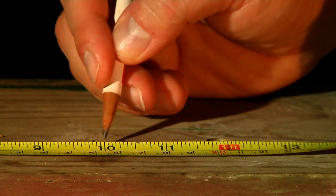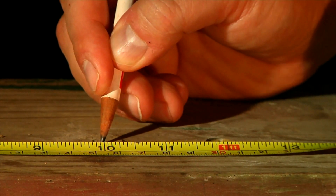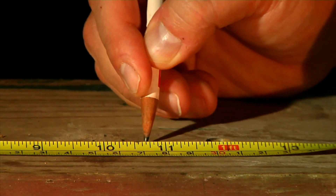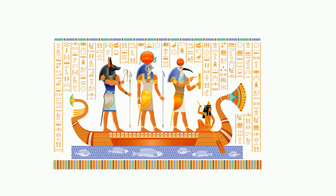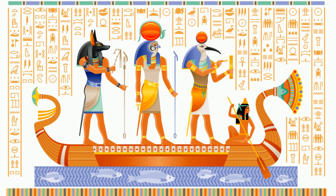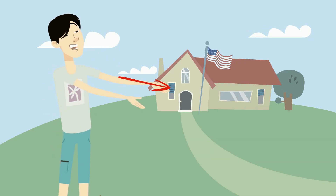Measurements have been a part of our lives for a long, long time. In fact, one of the first civilizations to record measurements was Egypt. In Egypt, rods or bars of exact length called standards were kept in temples for basic measurement. The basic unit of length was the cubit, which was about the span from your elbow to your middle finger.